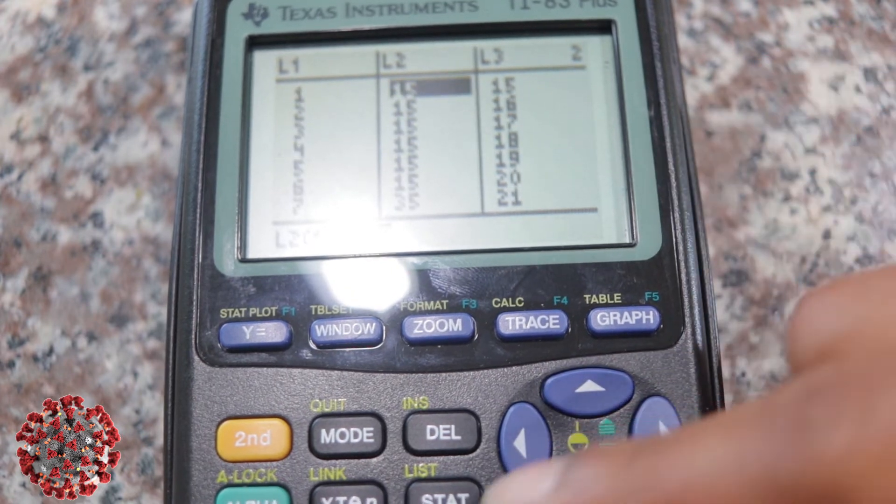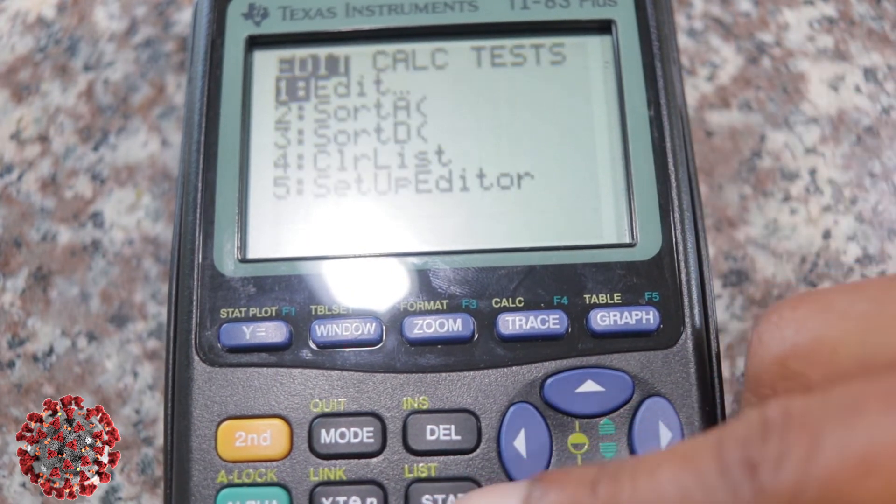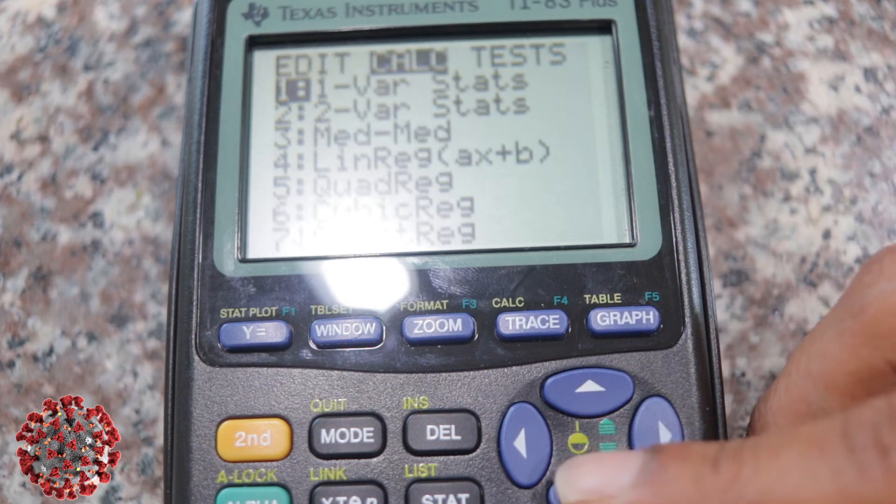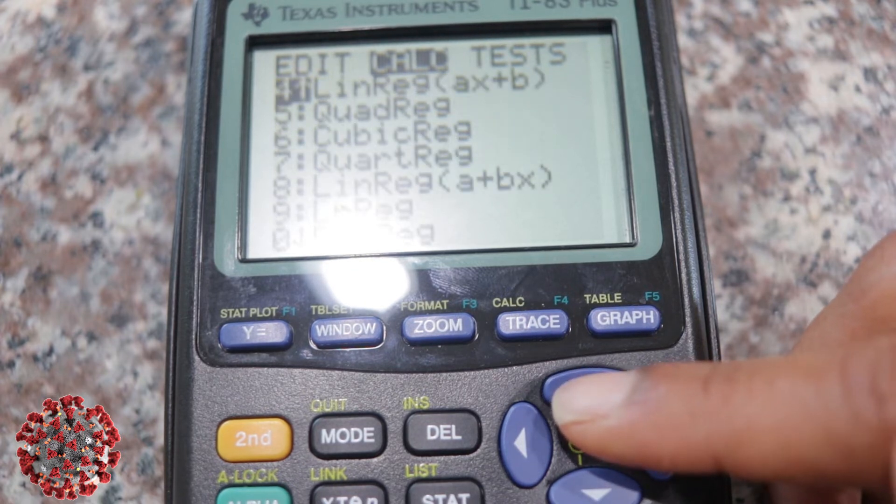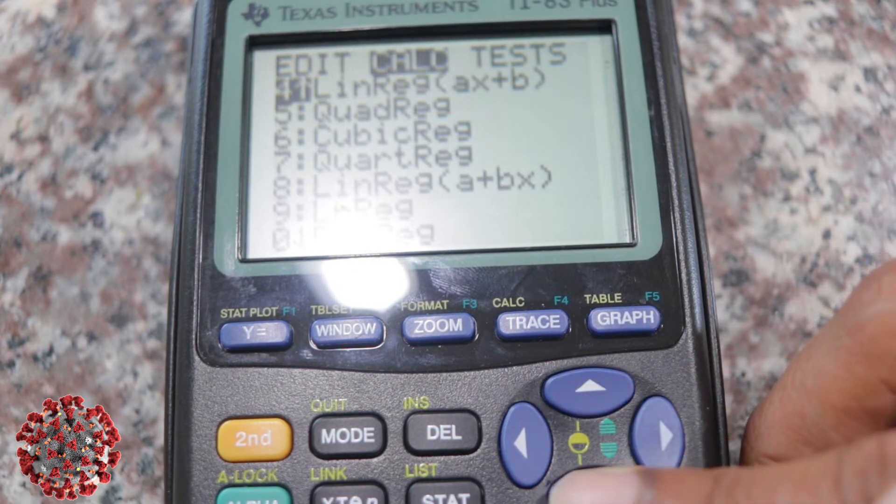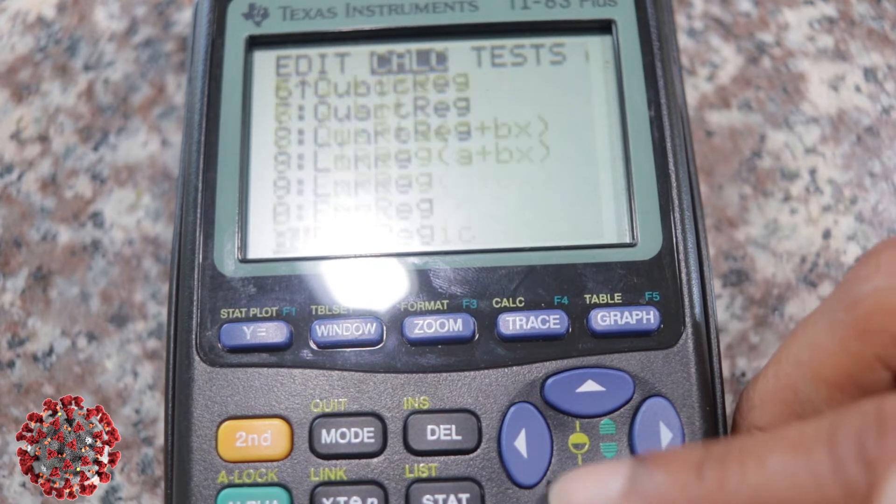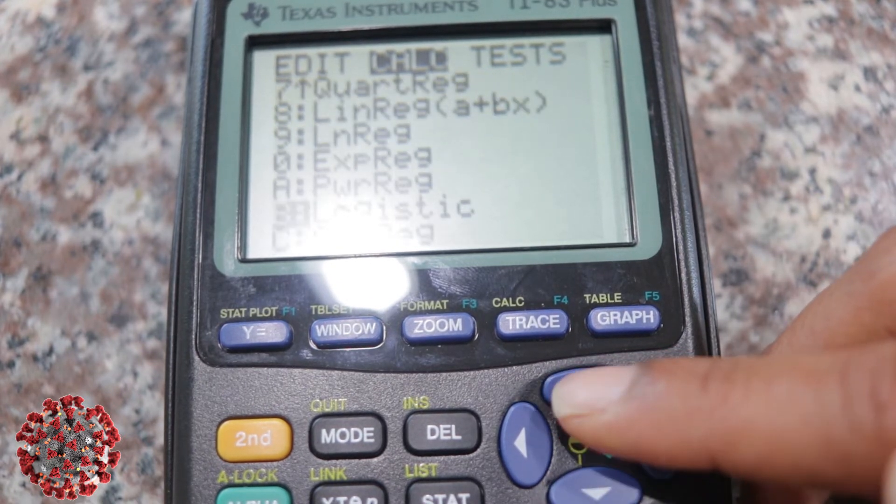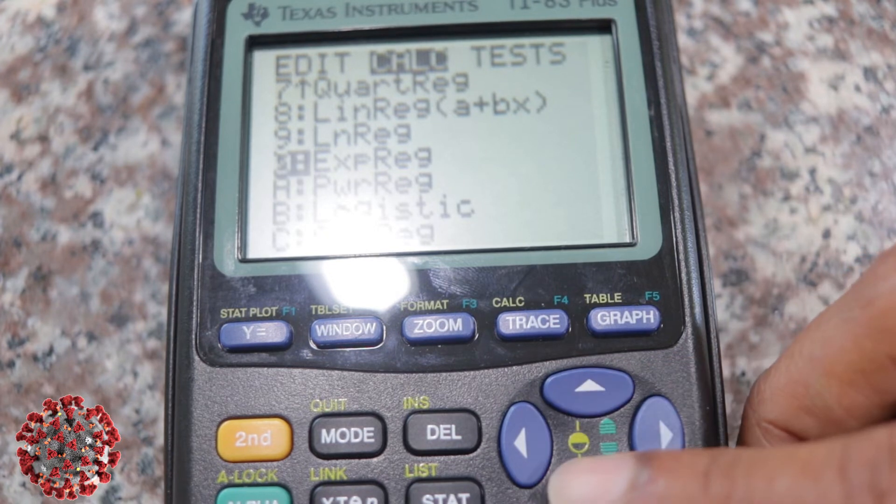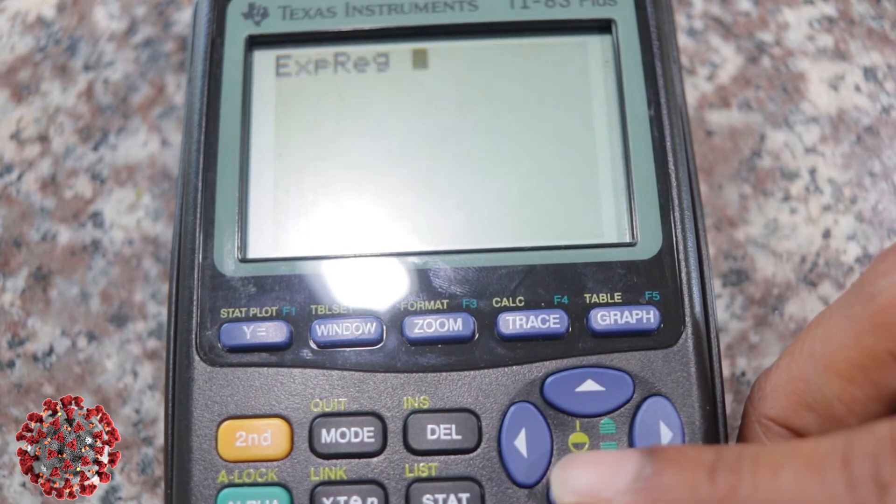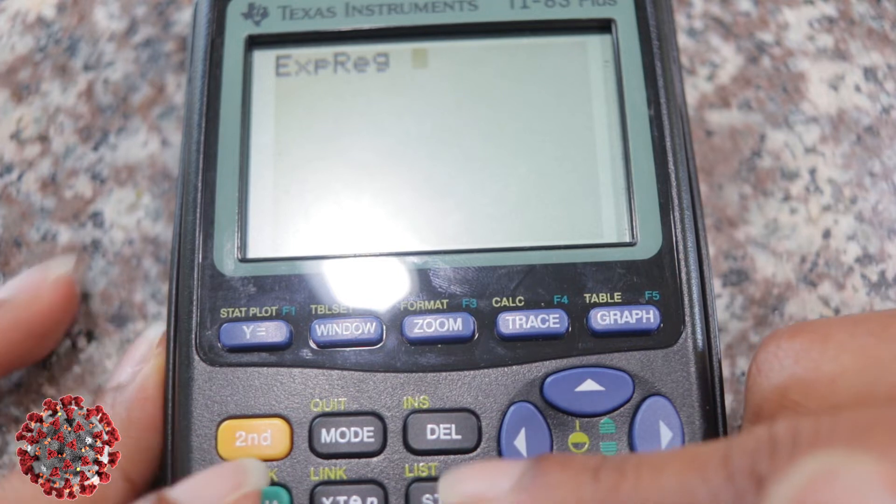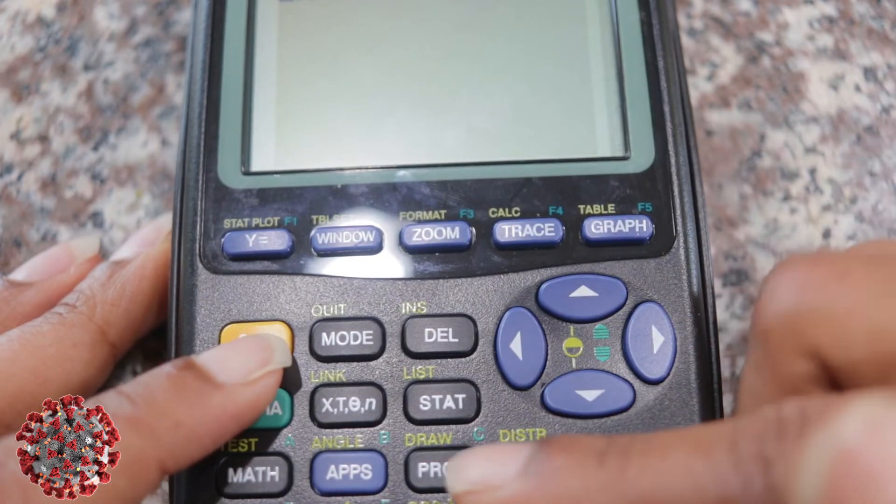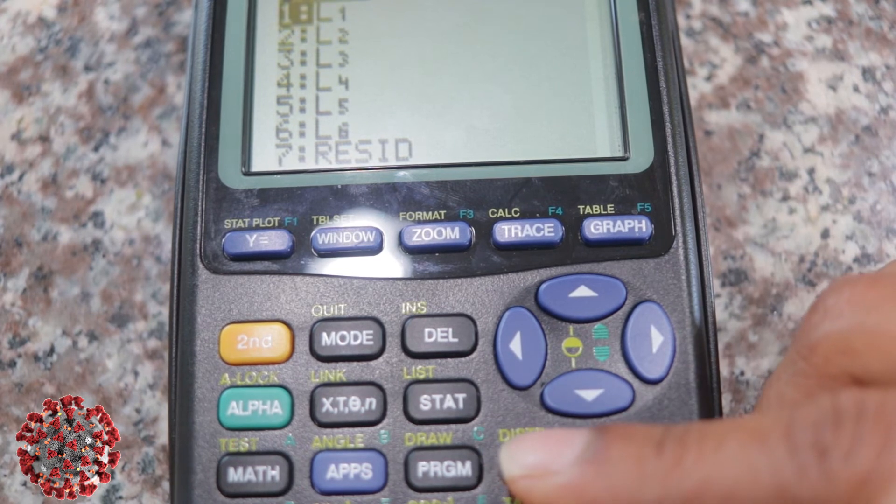So the next thing I want to do is I want to go back to STAT. This time I'm going to scroll over to where it says CALC. And then I'm going to scroll down to where I see, so there are different types of regression you could do, and that depends on the shape of the graph. But I want to go down to where it says exponential. I think I passed it. Yeah, so zero says exponential regression. That's the one I want to do, and I want to hit ENTER.